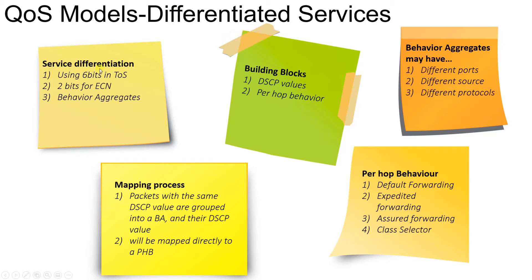Services from different applications and different customers are differentiated in three ways. First, six bits are taken from the TOS field and used as DSCP values — DSCP stands for Differentiated Services Code Point. Second, the remaining two bits are used for Explicit Congestion Notification. Third is behavior aggregates: if traffic flows going in a particular direction have the same DSCP value, they are grouped together into what is called a behavior aggregate.